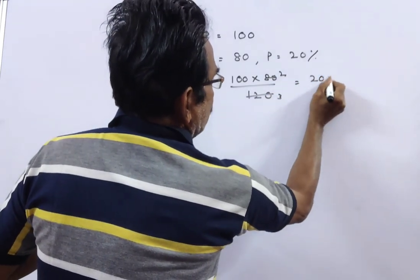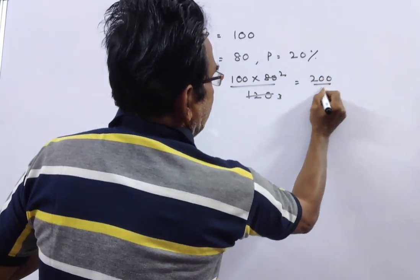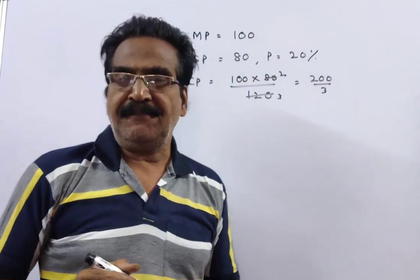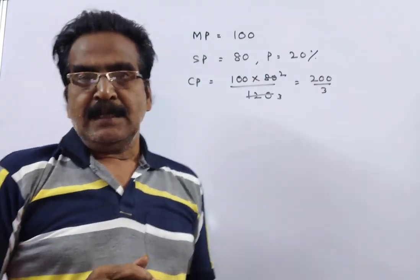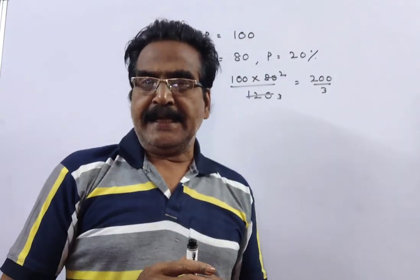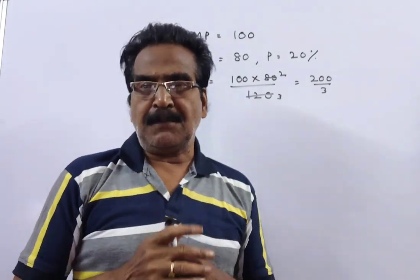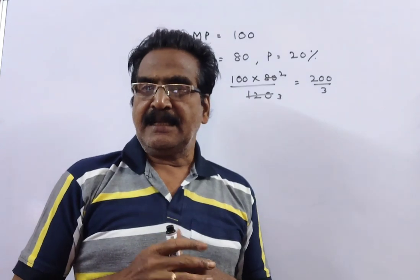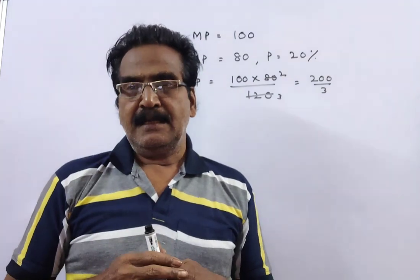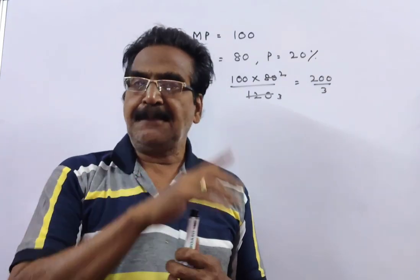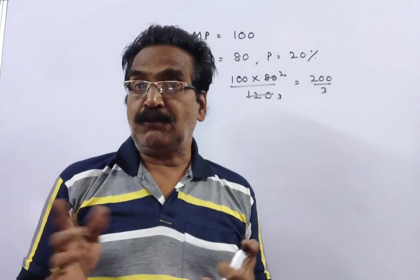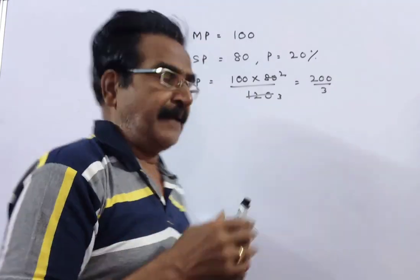So the cost price of each article is 200/3 rupees. Now, on a particular day he sold some articles at the marked price, and he gets a profit equal to the cost price of 100 articles.